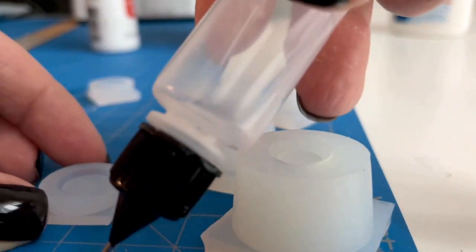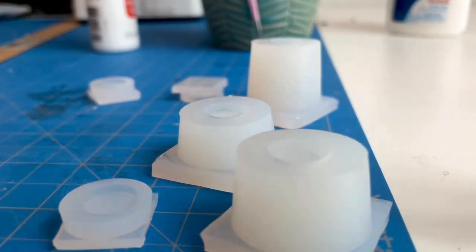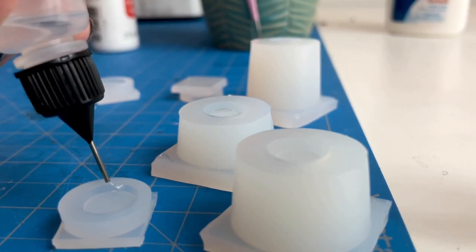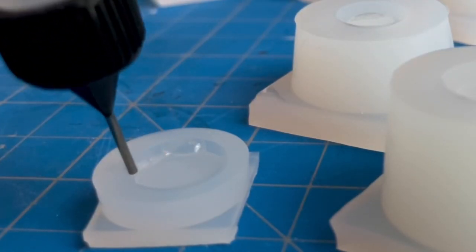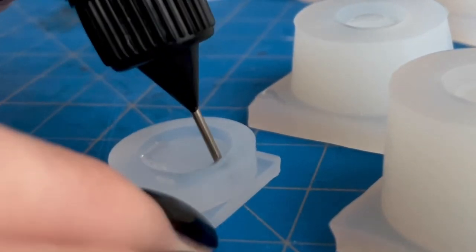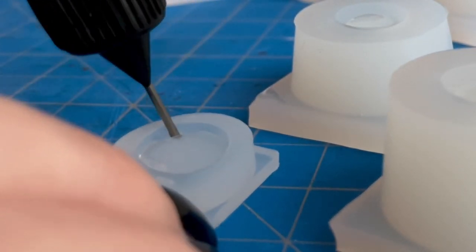I used my really thin nozzle to pour in some of the resin into the molds that will be the lids. I found that these really thin almost needle-like nozzles are really great for really small areas of getting resin into.